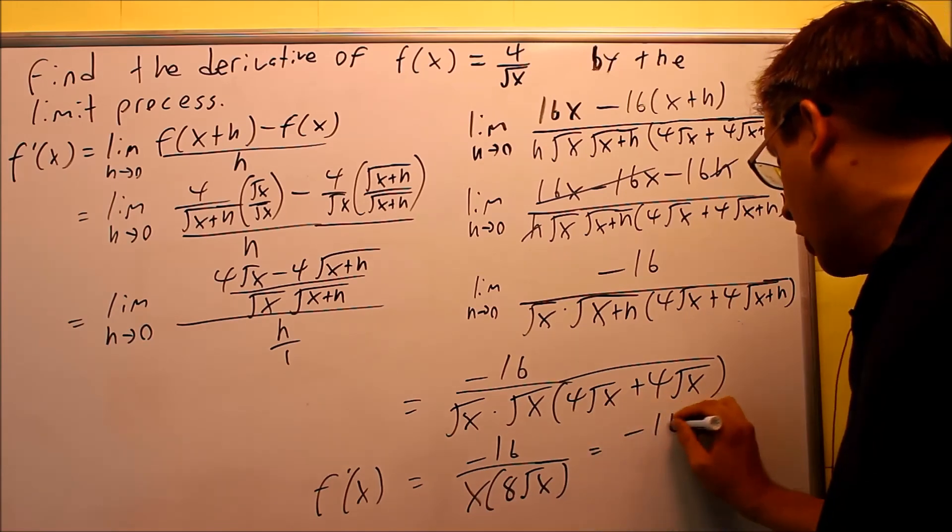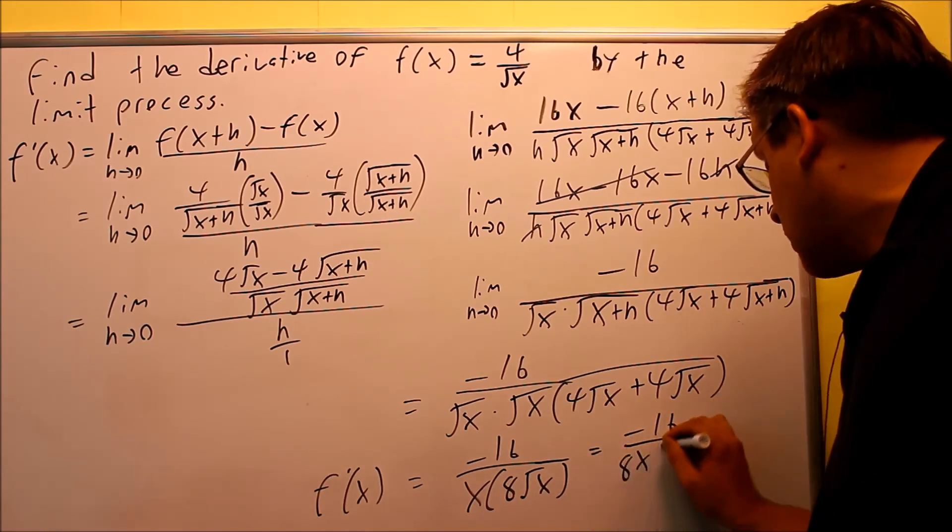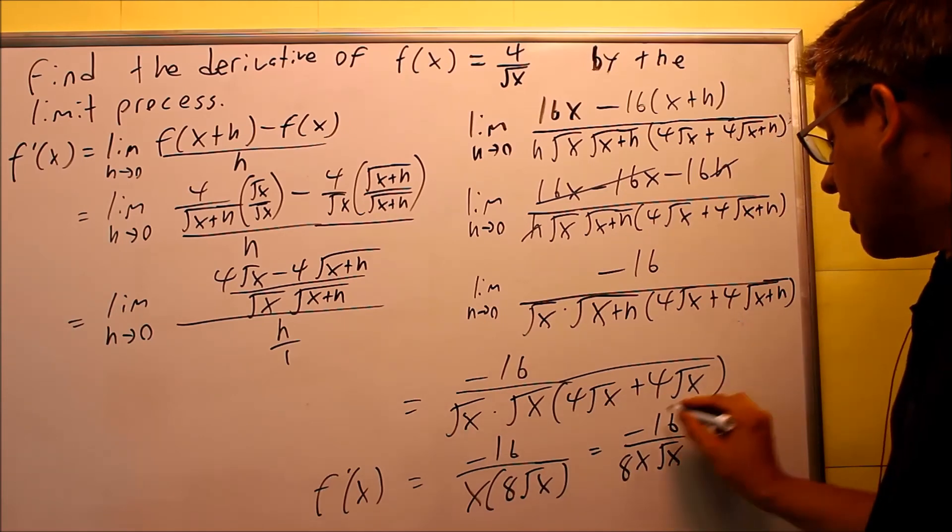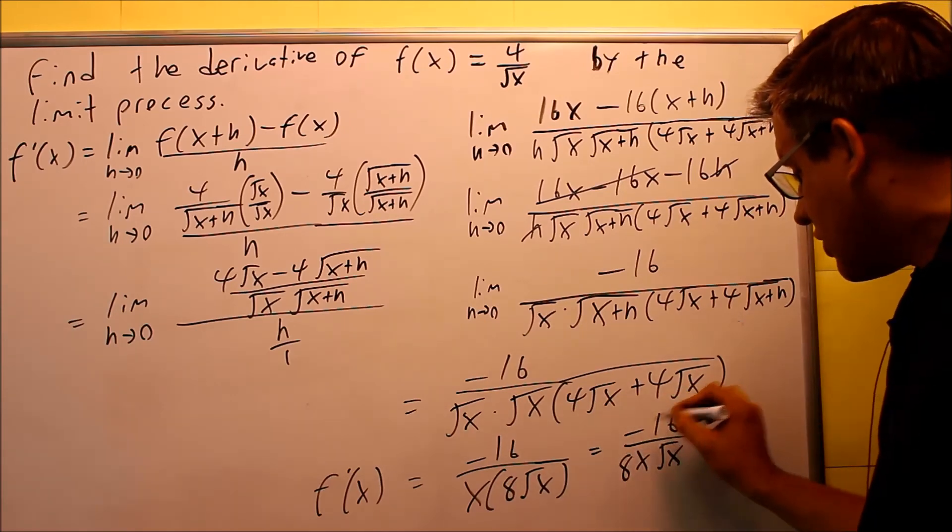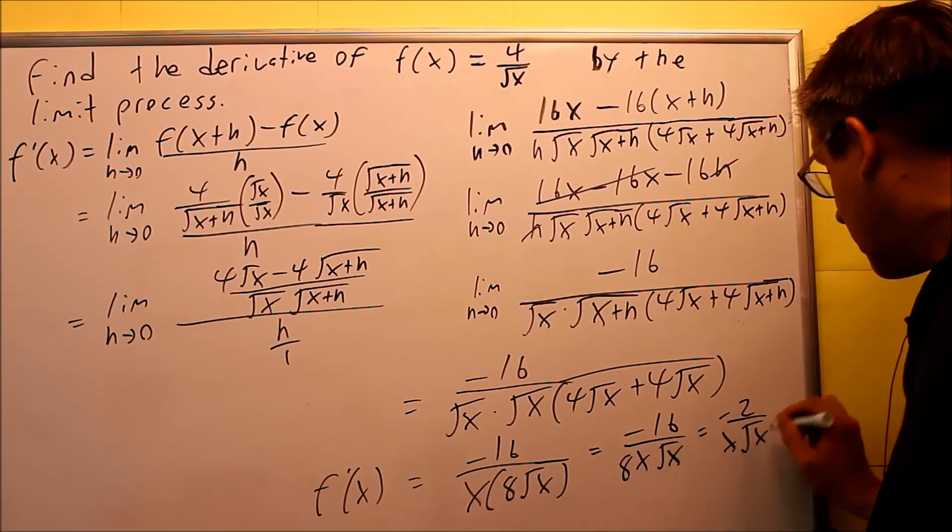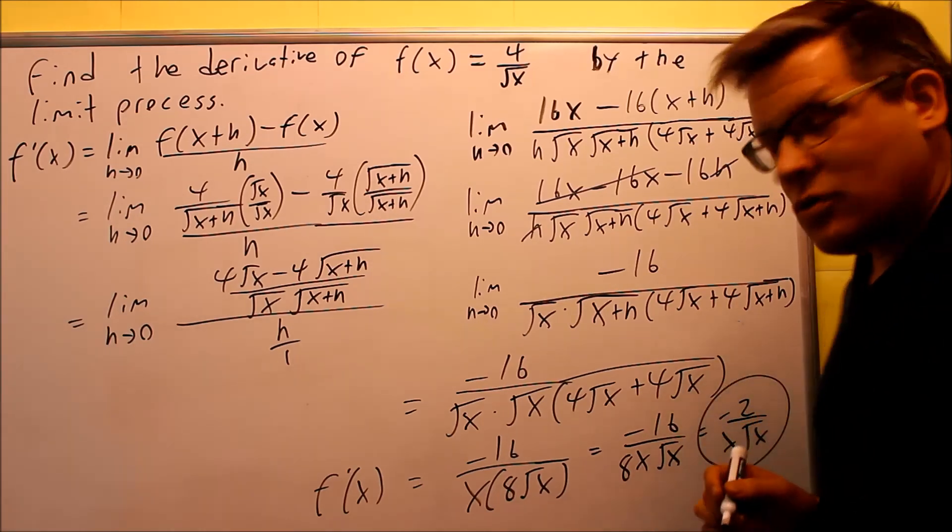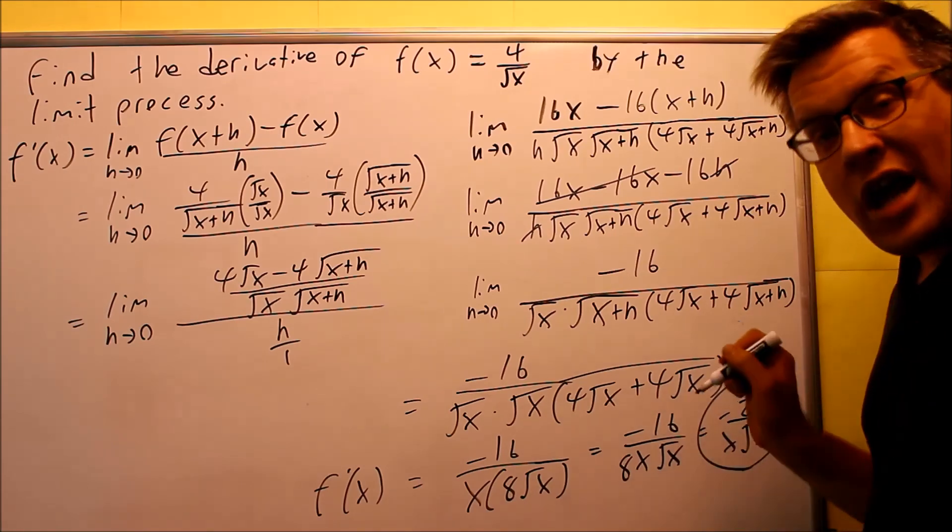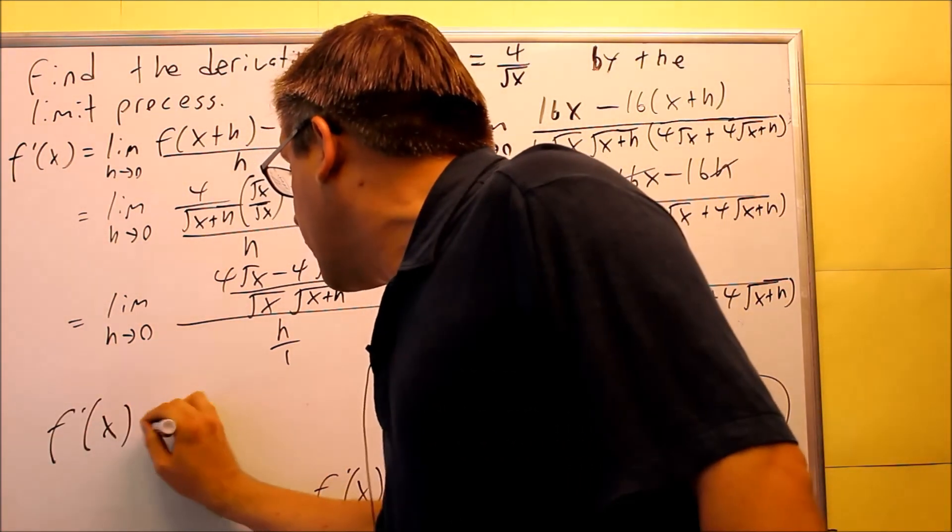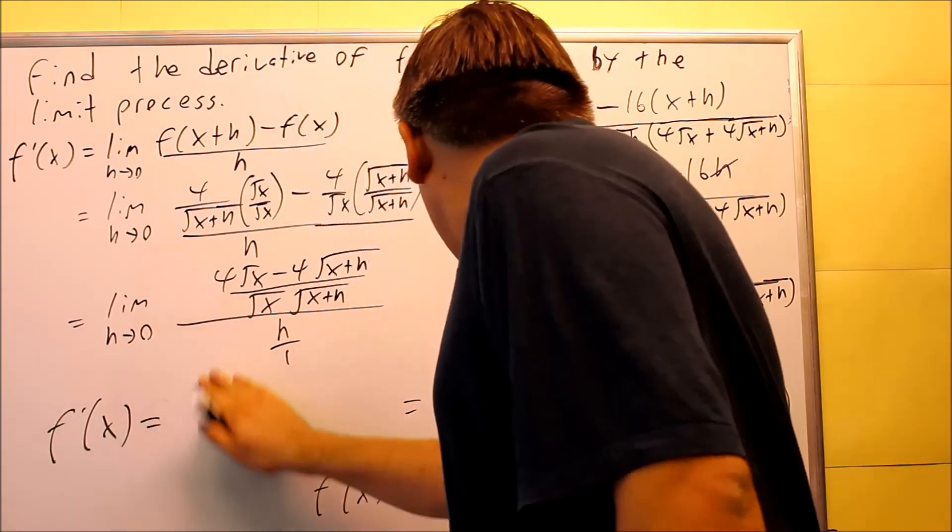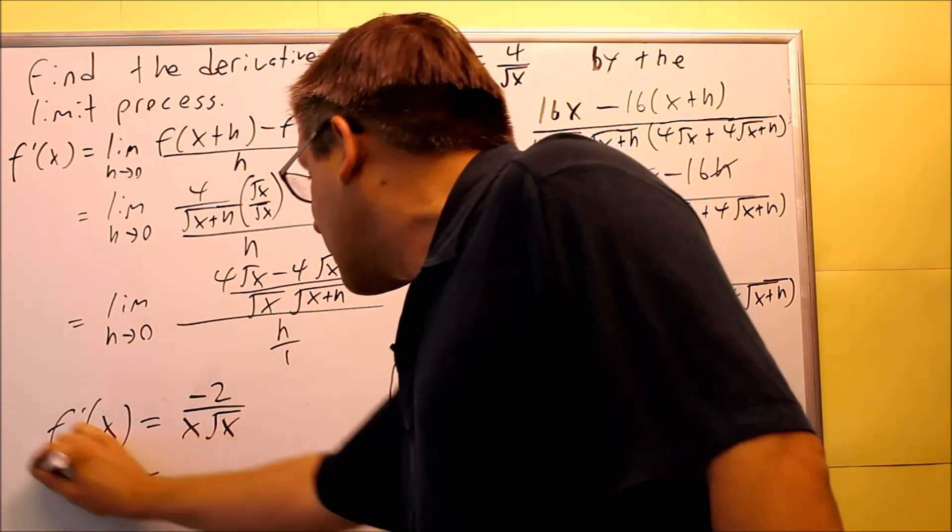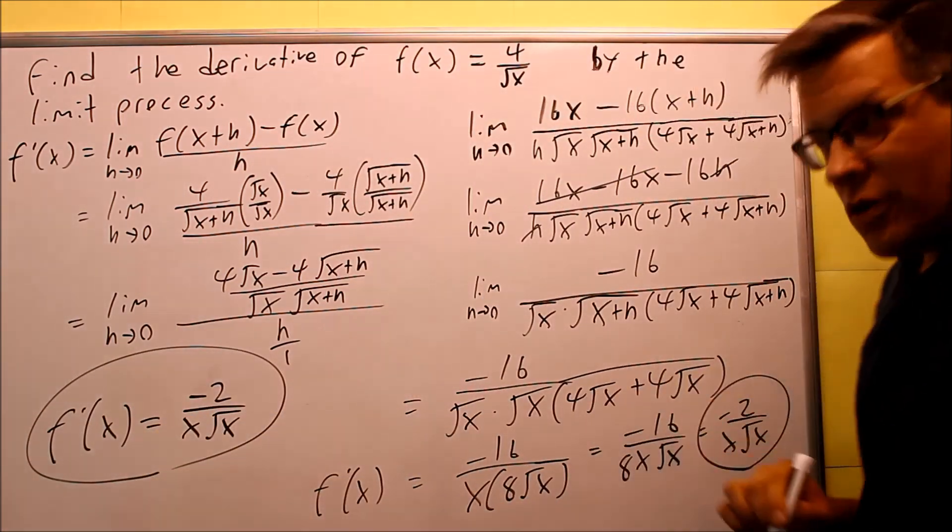Then I can leave it like that or you can write it as eight x square root of x. You can switch the order and then you can reduce the negative sixteen over eight and you get this. So, the final answer is negative two over x square root of x. So, that is what I am going to write over here. The derivative is going to be negative two over x square root of x. That is going to be the final derivative.